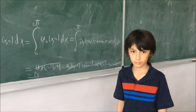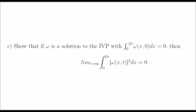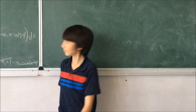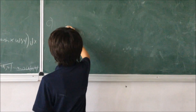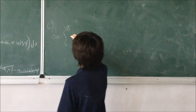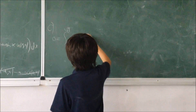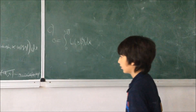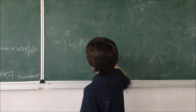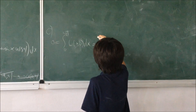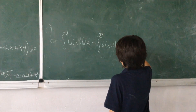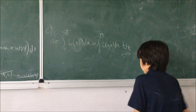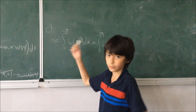Now let's solve part C. For part C, my hypothesis is the integral from zero to two pi of omega of x, t dx is zero. Also, by part B, this is equal to the integral from zero to two pi of omega of x, t dx for all t. So, this is equal to zero for all t.